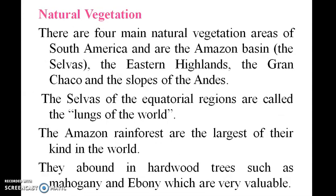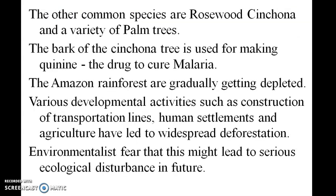Natural vegetation: There are four main natural vegetation areas of South America — the Amazon basin, eastern highlands, Gran Chaco, and slopes of the Andes. The forests of the equatorial region are called the lungs of the world. The Amazon rainforest is the largest of its kind in the world. Common species include rosewood, cinchona, and a variety of plum trees. The bark of cinchona trees is used for making quinine, the drug to cure malaria.